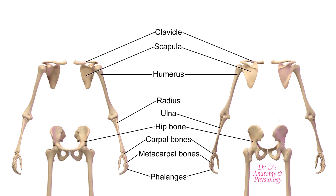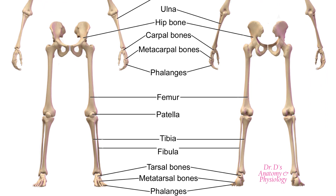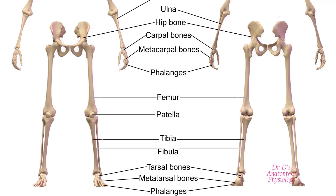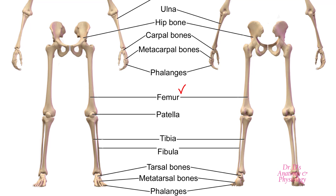In the lower limb, the base is formed by the hip bones, which are securely attached to the sacrum, forming the platform on which the lower limbs move. The bones of the lower limbs include the femur, the tibia, and the fibula.